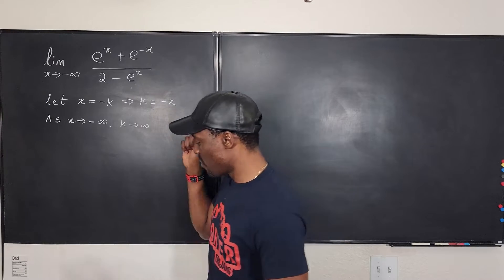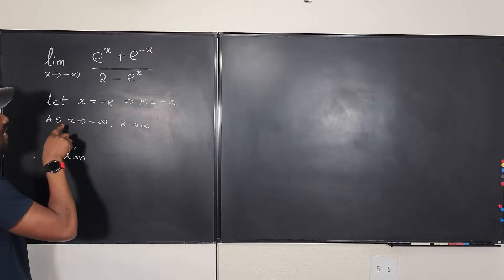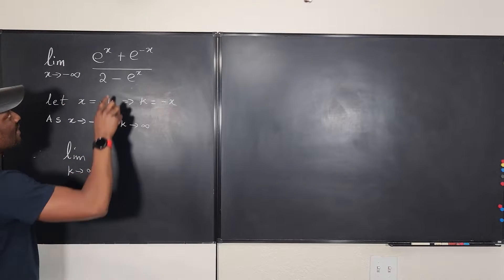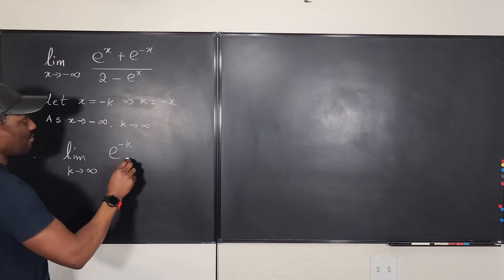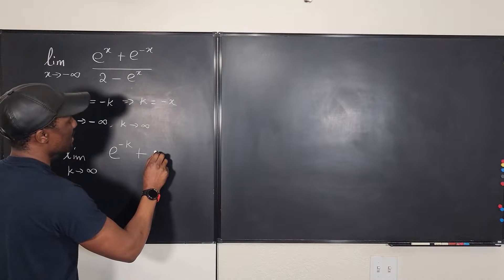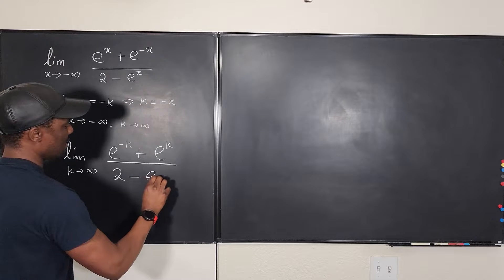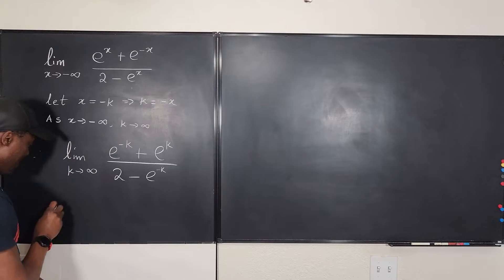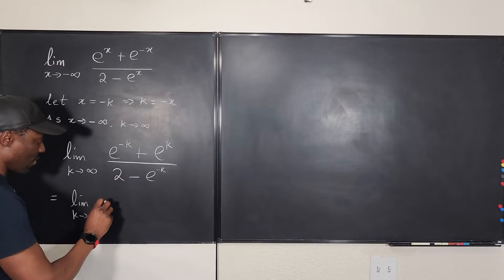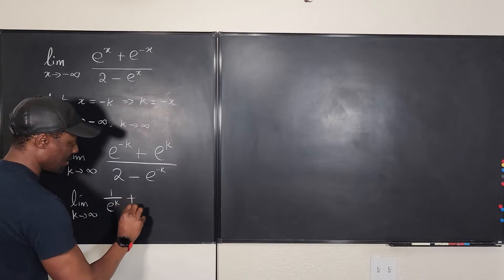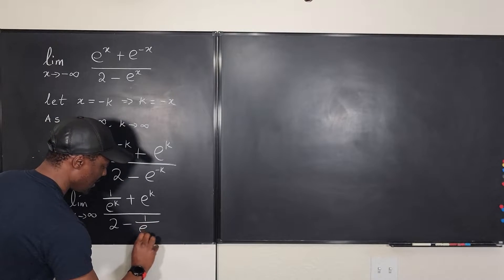So what I'm going to do now is rewrite the problem. Therefore we have the limit — instead of saying as x goes to negative infinity, I'm going to say as k goes to infinity — then we're going to have e to the negative k. Anywhere we see x we write negative k, plus e to the k. It's looking nice; it looks like nothing changed on top, and then you're going to have 2 minus e to the negative k.